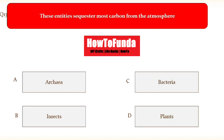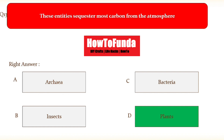Question number thirteen: these entities sequester most carbon from the atmosphere. Option A archaea, option B insects, option C bacteria, option D plants. The correct answer is plants — plants sequester the most carbon from the atmosphere.